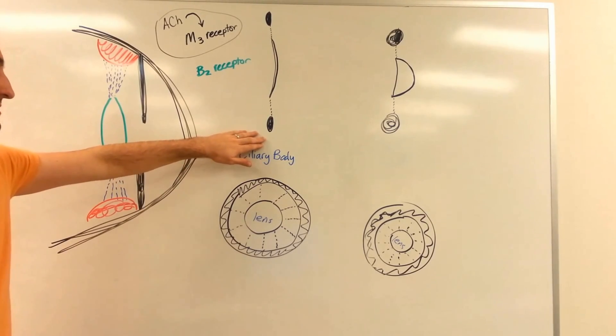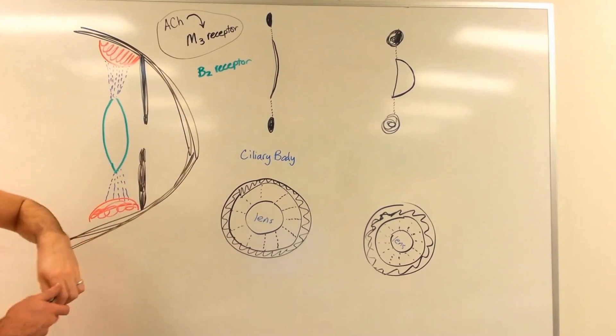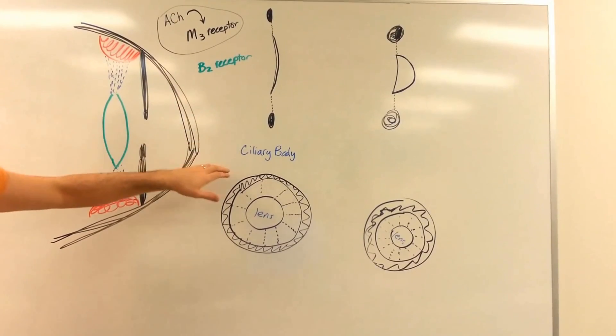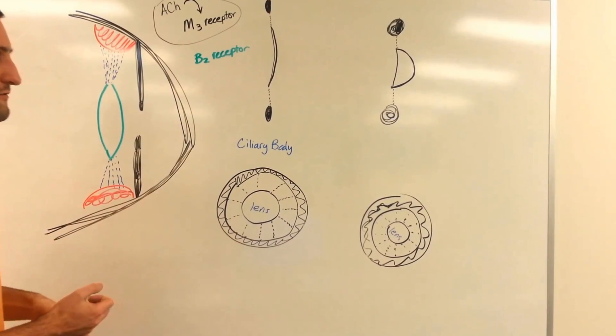And that's going to be important to remember. So if we activate the beta 2 receptors, that's going to cause the ciliary body to relax, and you'll get the lens pulled. And that's going to be good for far vision.